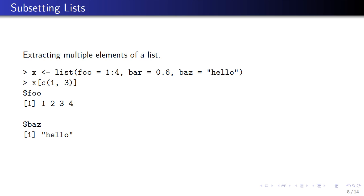If you want to extract multiple elements of a list, you need to use the single bracket operator. For example, if I want the first and third elements — 'foo' and 'baz' — I can pass the numeric vector c(1, 3) to x using the single bracket operator, and that returns a list with elements 'foo' and 'baz'. You cannot use the double bracket or the dollar sign operators when you want to extract multiple elements of a list.